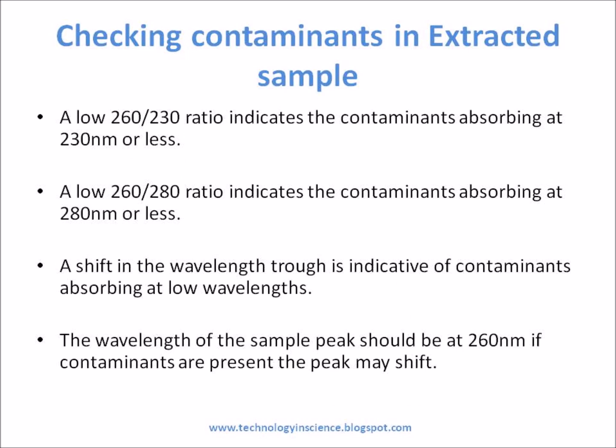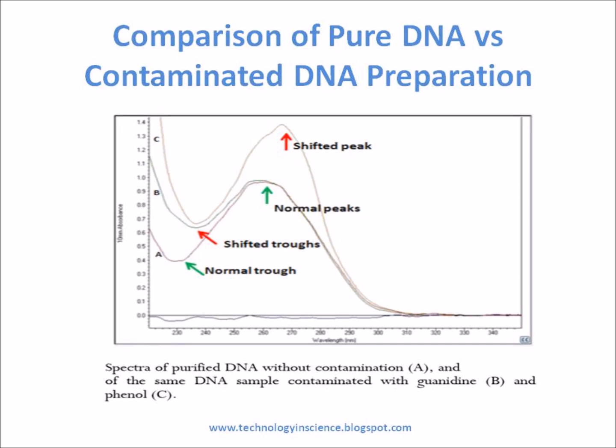A low 260/230 ratio indicates contaminants absorbing at 230 nm or less. A low 260/280 ratio indicates contaminants absorbing at 280 nm or less. A shift in the wavelength trough is indicative of contaminants absorbing at low wavelengths — the sample peak should be at 260 nm, but if contaminants are present the peak may shift. If the sample is contaminated with proteins or other organic compounds, the 260/280 ratio will vary from the expected values.